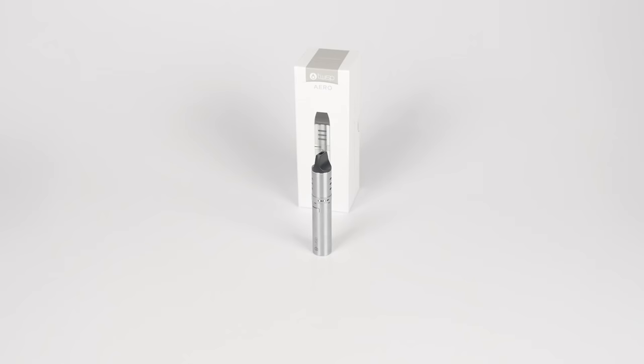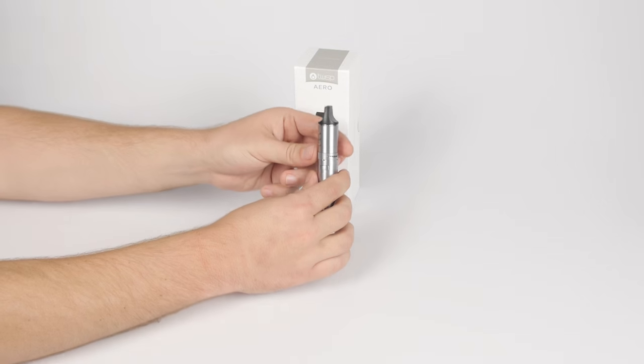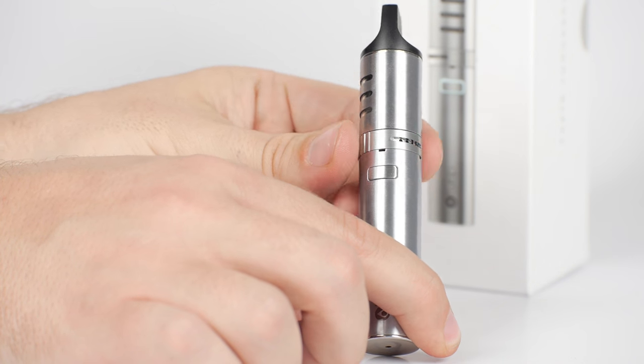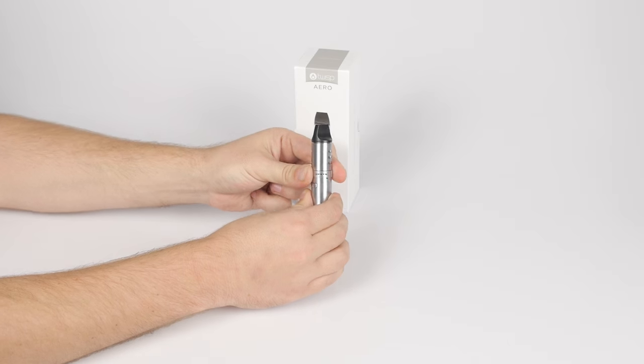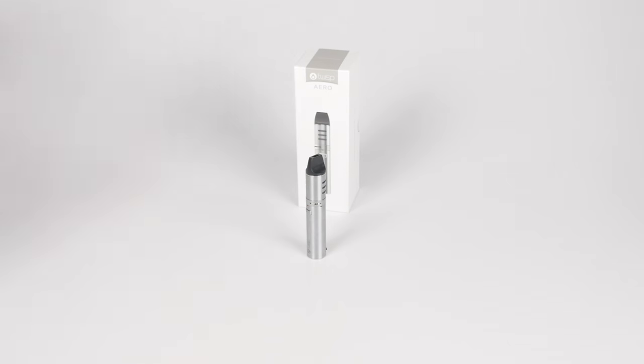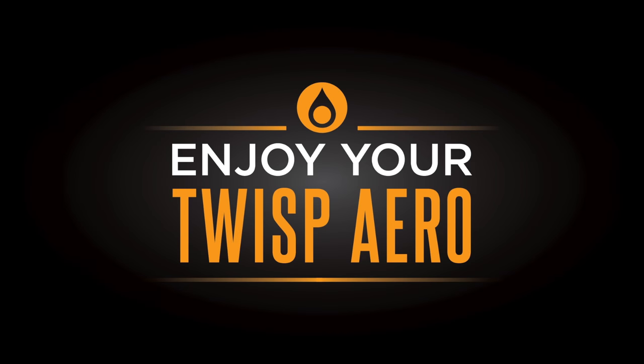Your TWISP AERO features adjustable airflow control, allowing you to select the amount of vapor your device will produce. To adjust it, rotate the ring around the center of the device. Rotating it clockwise will decrease vapor production, while rotating it counter-clockwise will increase it.